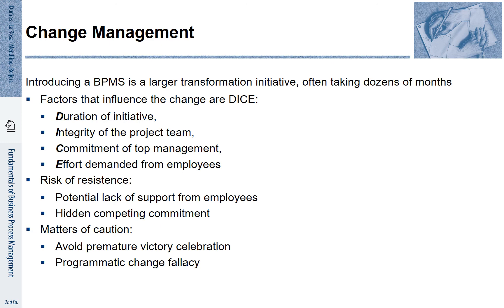D relates to the duration of the initiative — the longer it takes, the more critical it is. I is integrity of the project team — the more integrity the project team has, the more likely the success. C is the commitment of top management, which is also required to secure success. And E is the effort demanded from employees. In the best case, we should make sure that our initiatives do not run too long and that we can very quickly show improvements for the employees. For this reason, many companies are these days looking into agile practices.